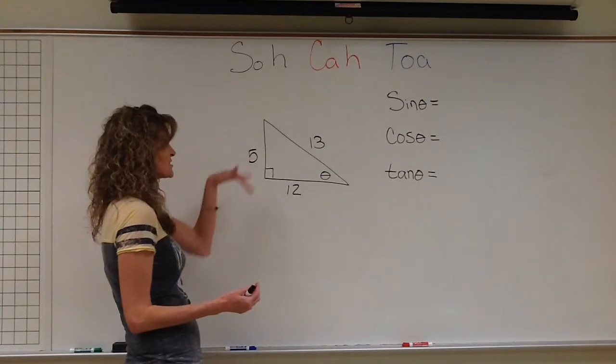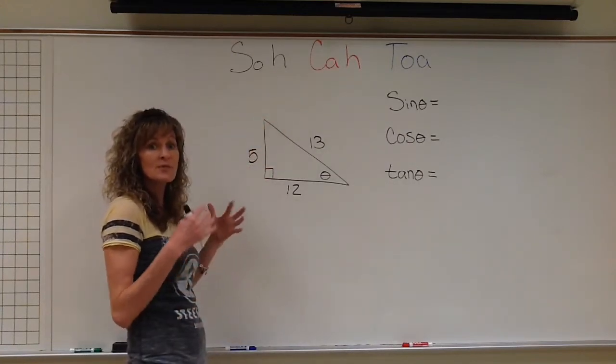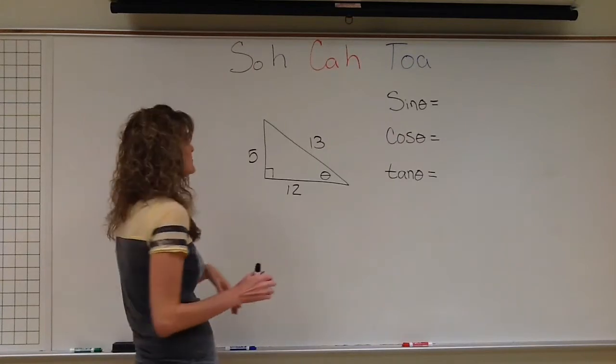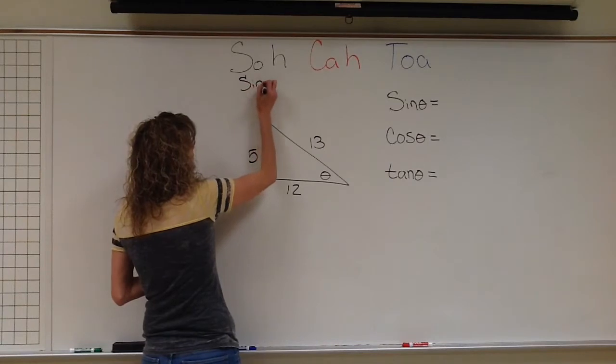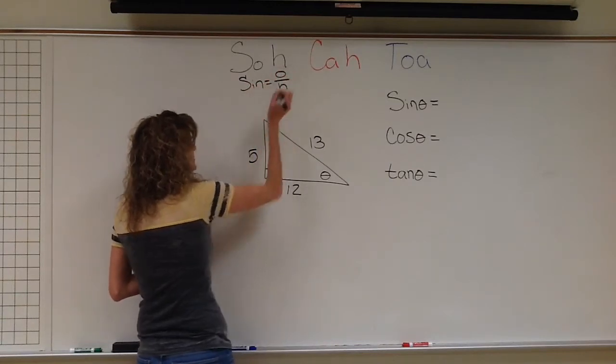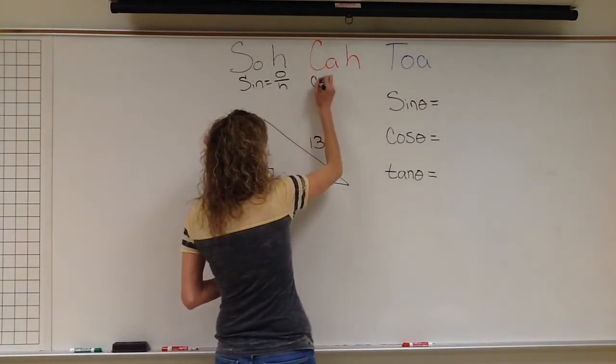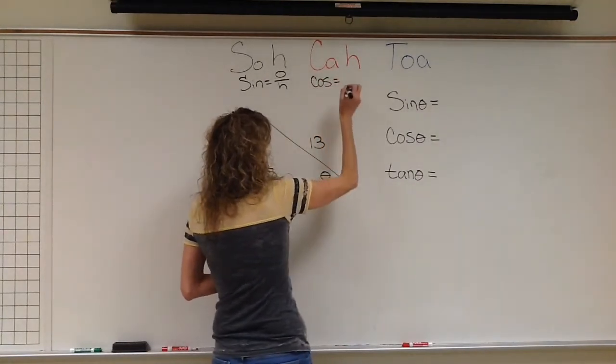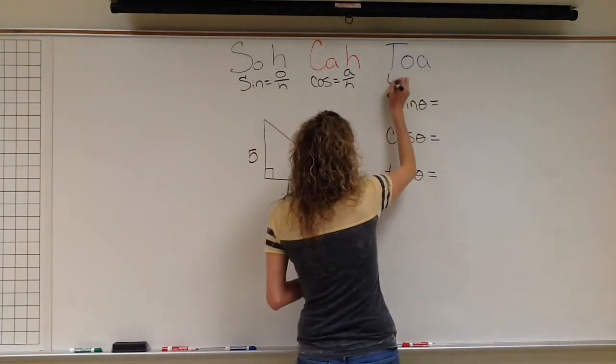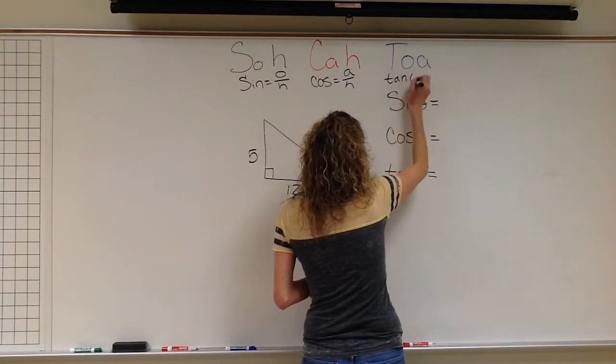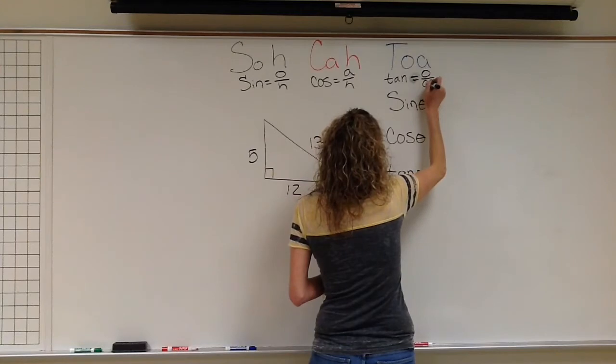So we're just going to use our basic SOH-CAH-TOA, and we're going to set up those ratios. So that's the basic foundation for this. Remember SOH stands for the sine of an angle equals the opposite side over the hypotenuse. CAH stands for the cosine of an angle equals adjacent over hypotenuse. And TOA stands for the tangent of an angle equals opposite over adjacent.